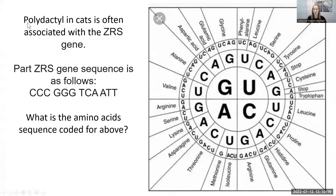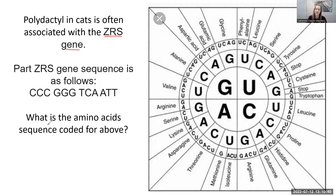Here's our practice problem. Polydactyly is associated with the ZRS gene. Part of the ZRS gene sequence is as follows: CCCGGGTCATT. The question we're going to answer — which should feel familiar from your quizzes and homework — is: what is the amino acid sequence coded for above? There are two steps we're going to do here. First, because this is a gene, it's going to be made of DNA. DNA is in our genes.